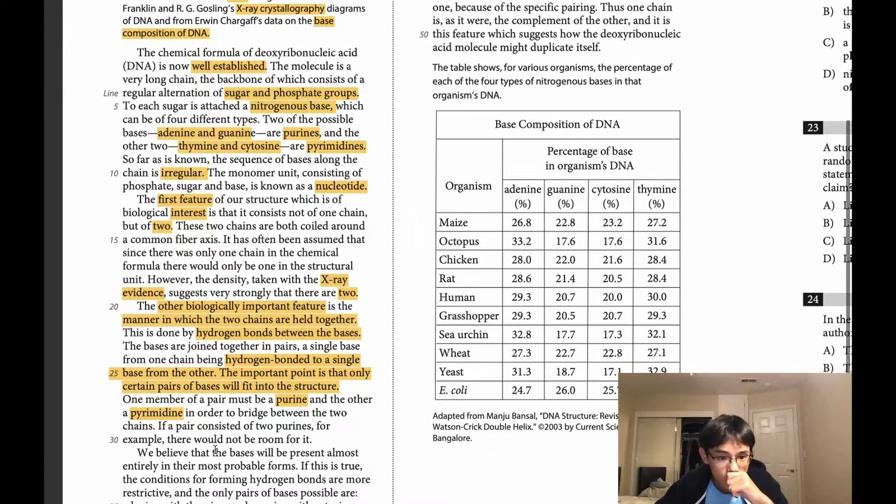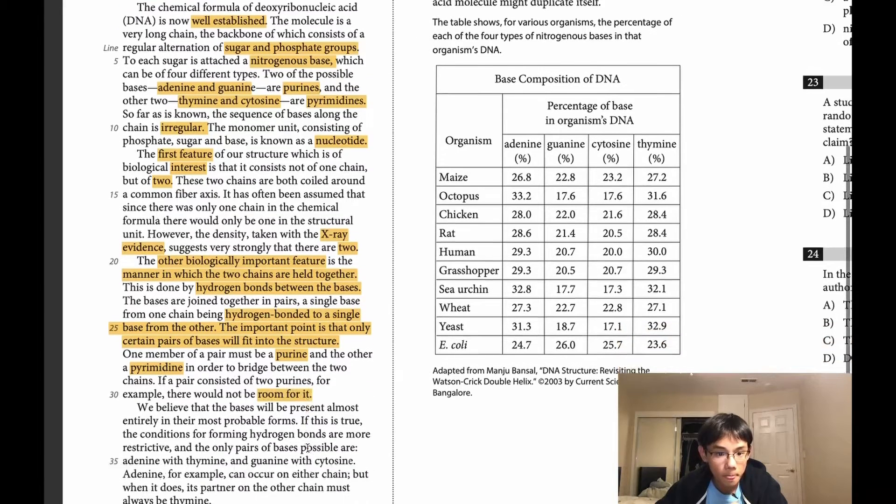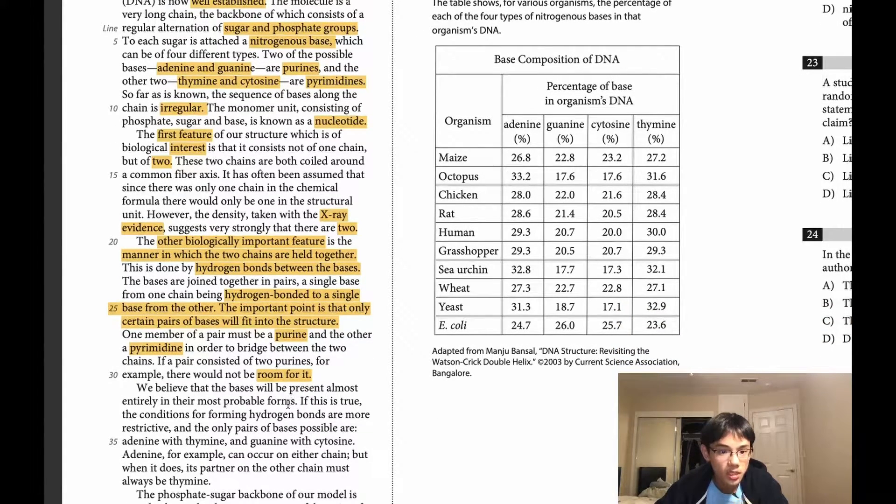In order to bridge between these two chains, if a pair consisted of two purines, for example, there would be no room for it. We believe that the bases will be present almost entirely in their most probable forms. If this is true, the conditions for forming hydrogen bonds are more restrictive. And the only pairs of bases possible are adenine with thymine, guanine with cytosine. So there are further restrictions, as this paragraph says, of the pairing of the nitrogenous bases. So we really have to be able to identify that this process is restrictive and the only pairs possible are adenine with thymine and guanine with cytosine.